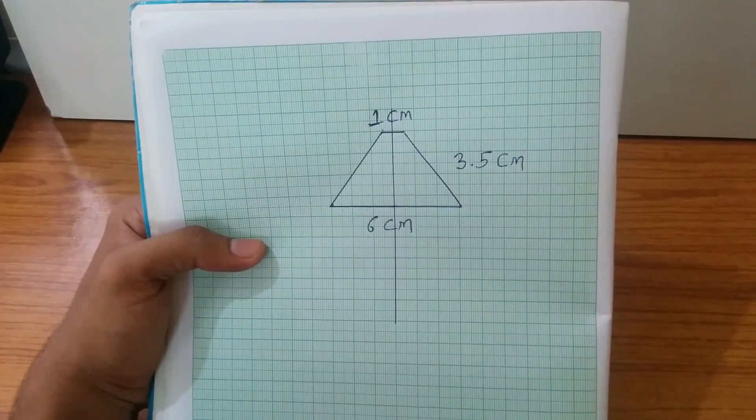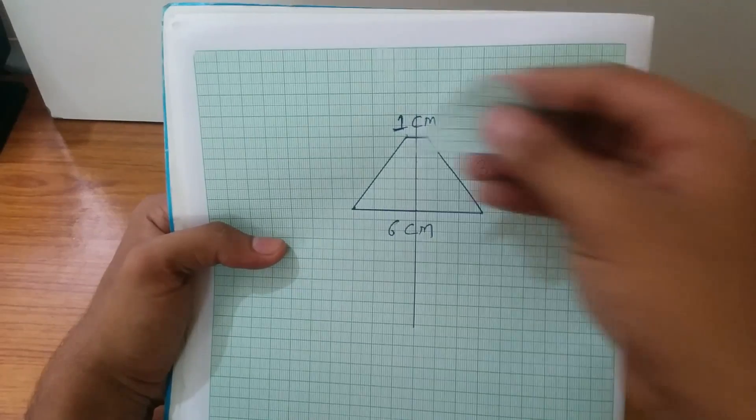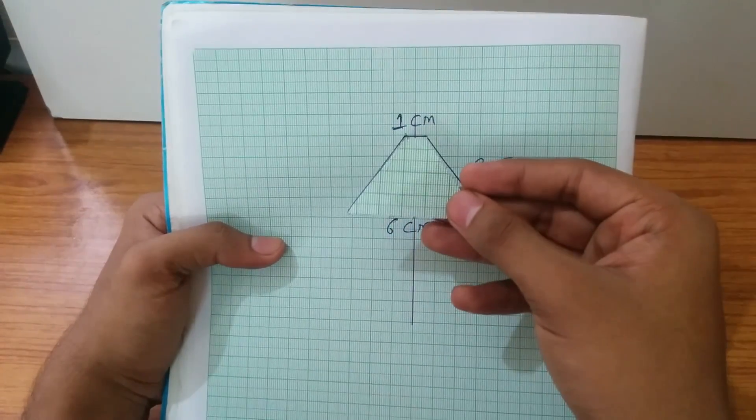Now after drawing this figure, you have to cut out this figure from the graph paper. It will look like this.